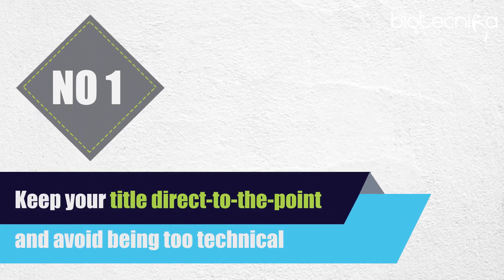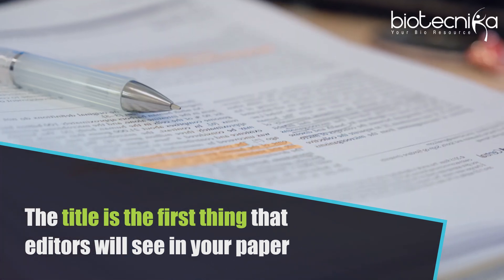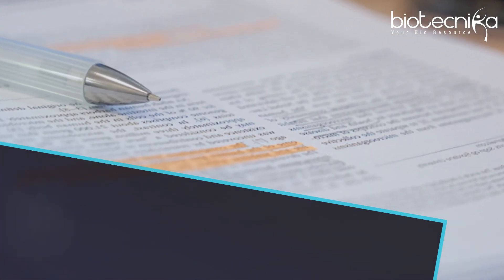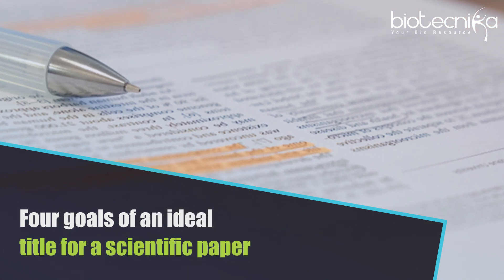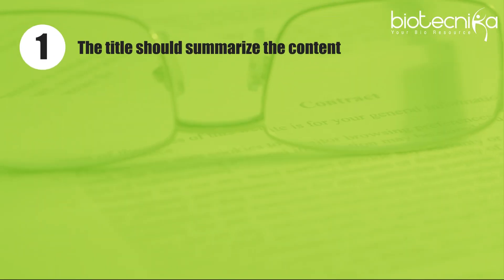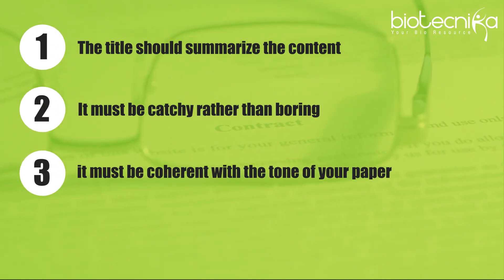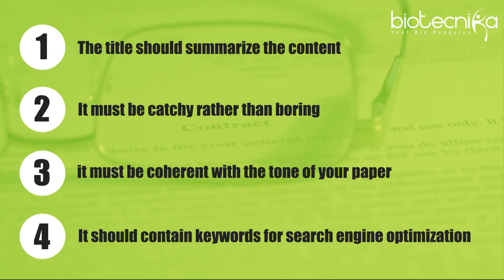Keep your title direct to the point and avoid being too technical. The title is the first thing that editors will see in your paper. Hence, your title must accomplish the four goals of an ideal title for a scientific paper. The title should summarize the content. It must be catchy rather than boring. It must be coherent with the tone of your paper. It should contain keywords for search engine optimization.